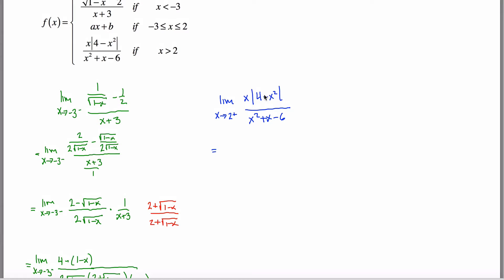First we want to get rid of the absolute value signs. If x is a little bit bigger than 2, then x² is a little bit bigger than 4, so 4 minus something slightly bigger than 4 is negative. To remove the absolute value signs I put in a negative, replacing |4 − x²| with −(4 − x²). The denominator x² + x − 6 I'll leave for now.